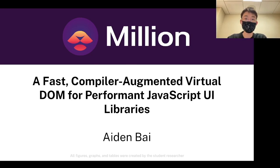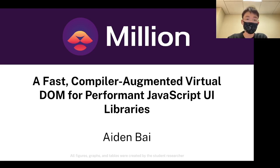Hey, my name is Aiden Bai. I'm a junior at Canvas High School, and for my project this year, I created Million.js, a fast compiler-augmented virtual DOM for performing JavaScript UI libraries.